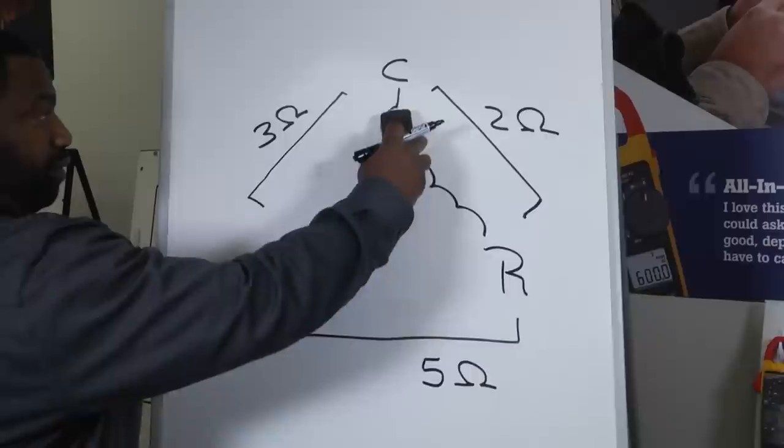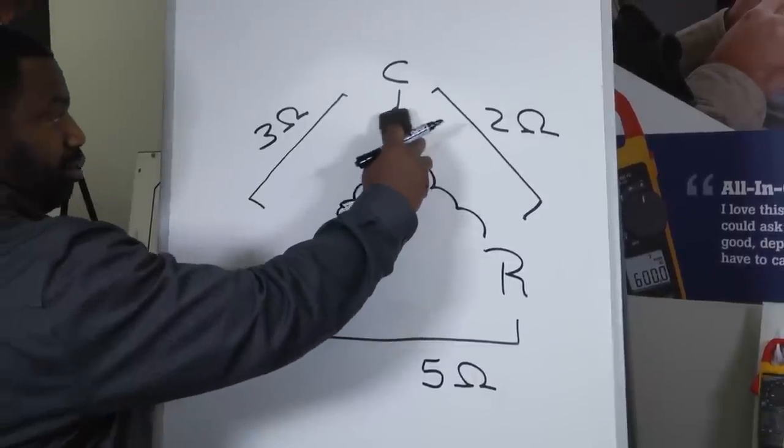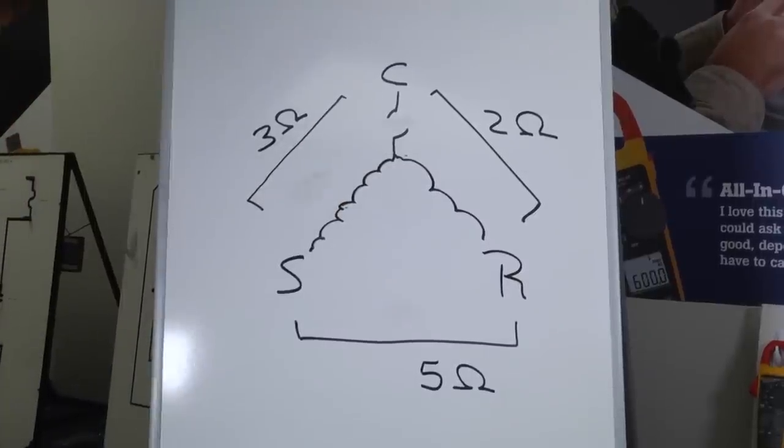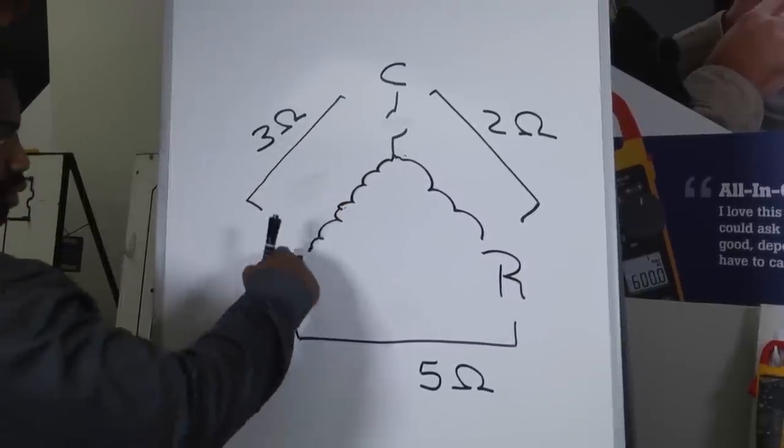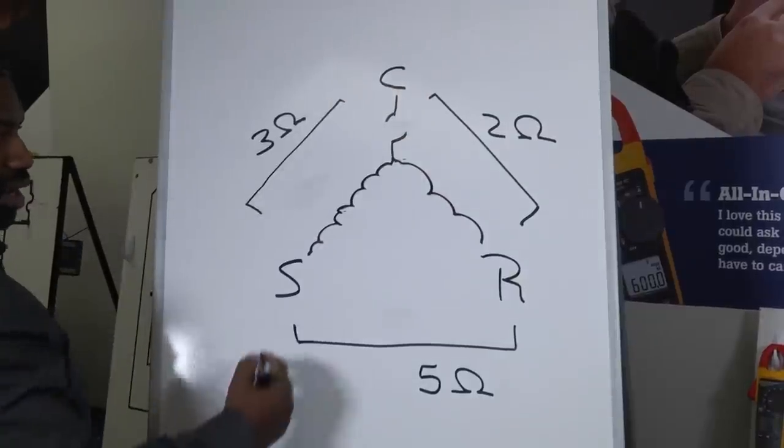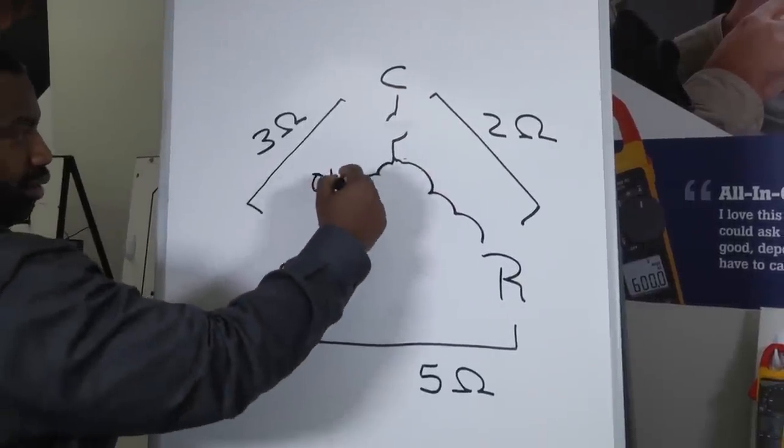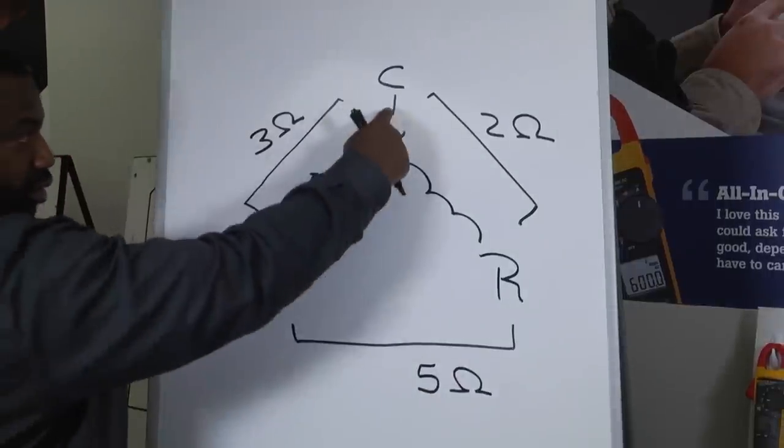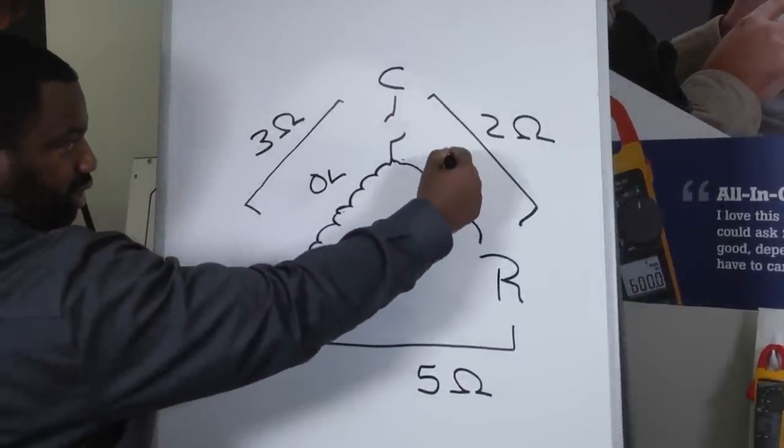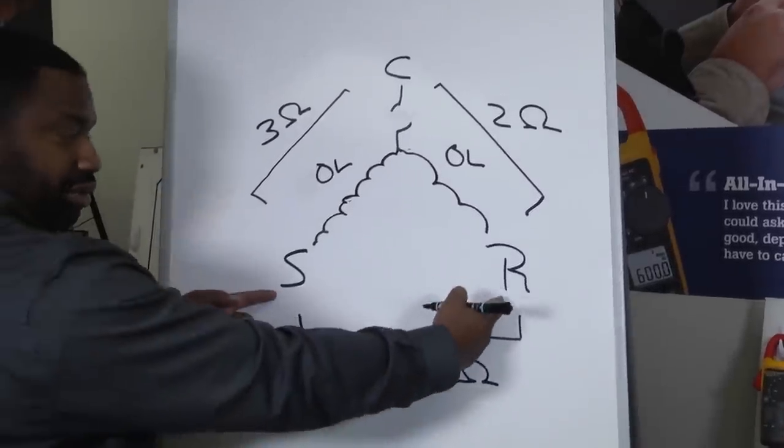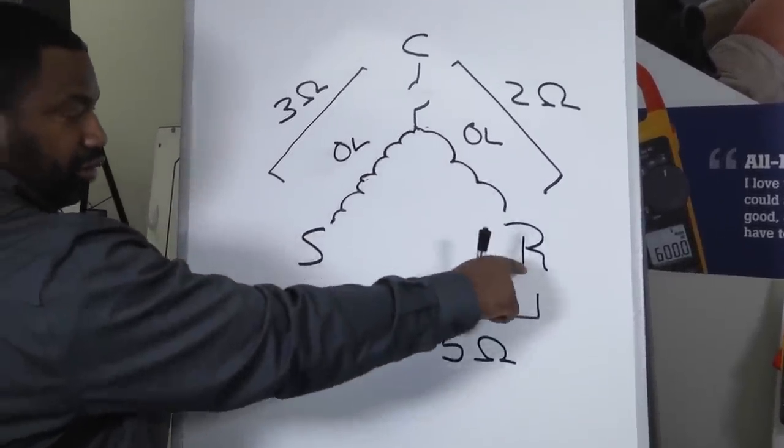One of the other things, check this out—what if we did this: let's say we had a thermal overload open. Could we make it from common to start? Nope, because we got a break, so we would see OL here. Could we go from common to run? Well no, because we got a break right there, so on this side we would see OL.